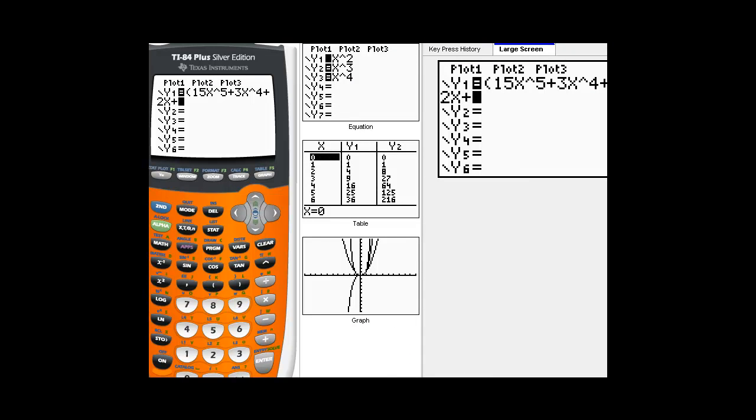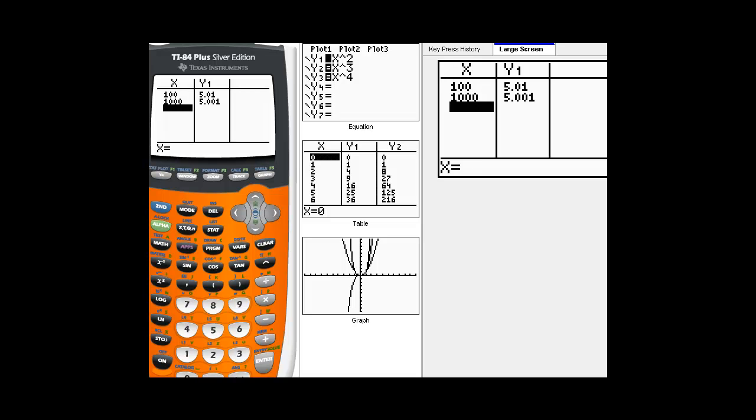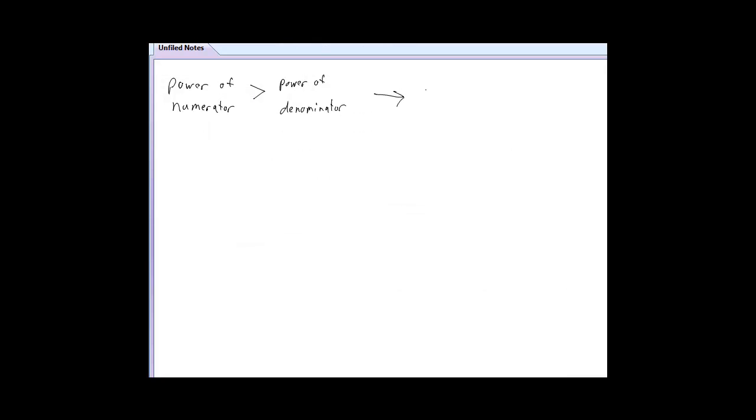15x to the fifth, plus 3 fourths, plus 2x, plus 9, divided by 3x to the fifth, plus 9x, minus 4. And now, if you look at your table values, I'm just going to go ahead and ask for really big values. So, first 100, then 1,000. You just keep getting closer and closer to 5. When you put in a really huge number, we got 5. So, we confirm that there.